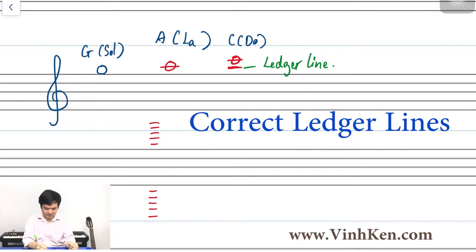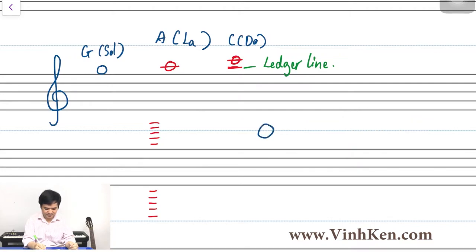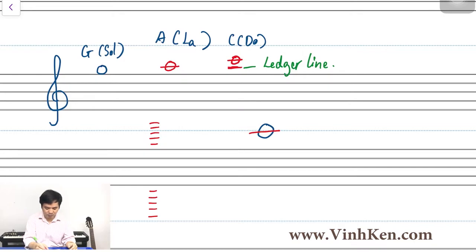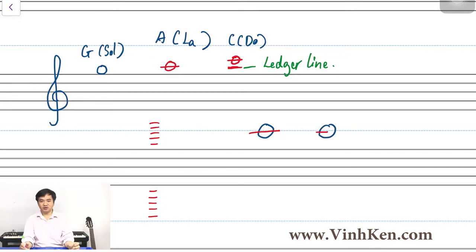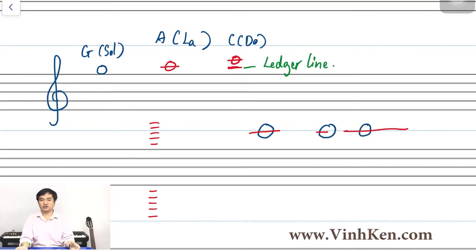For example, I have a note big like this. So we need a ledger line long enough to fit it. We don't make a very small one. For example, if we have a note big like this, we don't make a very small line. And we don't make very long lines either. We just need enough — just enough to fit the note.